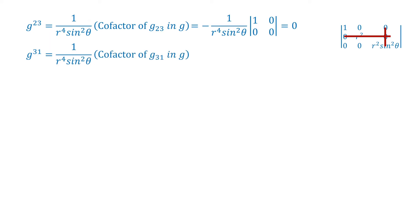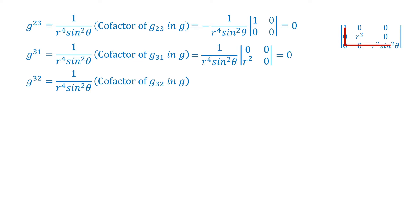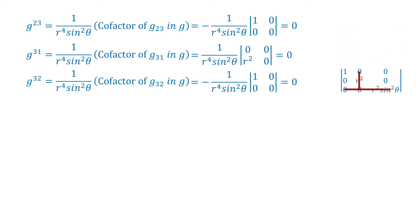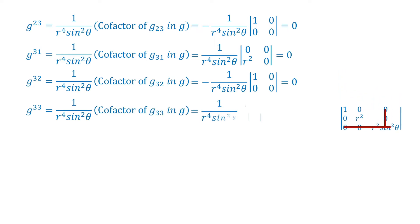g^31 equals 1 by r to the power 4 sin square theta, into the co-factor of g31, which equals 1 by r to the power 4 sin square theta, into the determinant of: 0, 0; r square, 0 — equal to 0. g^32 equals minus 1 by r to the power 4 sin square theta, into the determinant of: 1, 0; 0, 0 — equal to 0. Then g^33 equals 1 by r to the power 4 sin square theta, into the determinant of: 1, 0; 0, r square — which equals r square by r to the power 4 sin square theta, equal to 1 by r square sin square theta.